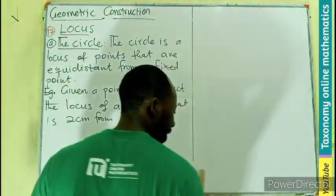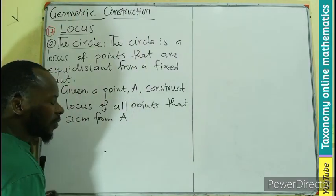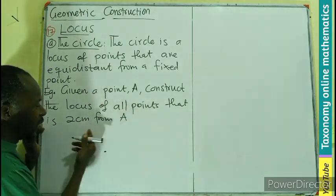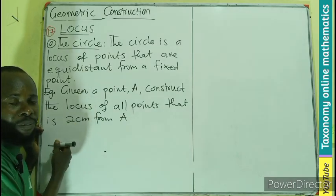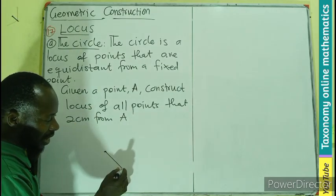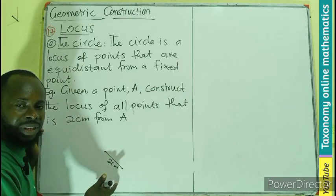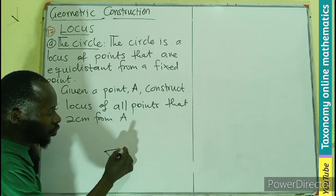So imagine A is at this place. If we are looking for all the points that will give us two centimeters away from A, the first point can be here, going to be two centimeters. So someone will draw this. Somebody will draw something like this, two centimeters. Another point will be here, two centimeters.